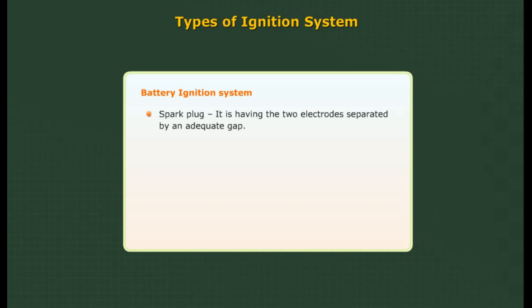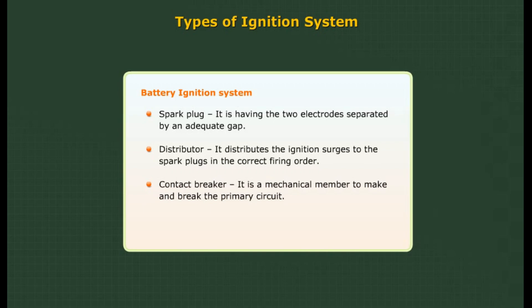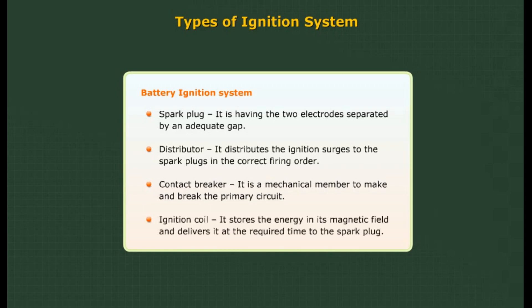Further components of the battery ignition system: Spark plug has two electrodes separated by an adequate gap. Distributor distributes the ignition surges to the spark plugs in the correct firing order. Contact breaker is a mechanical member to make and break the primary circuit. Ignition coil stores energy in its magnetic field and delivers it at the required time to the spark plug.